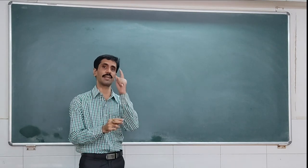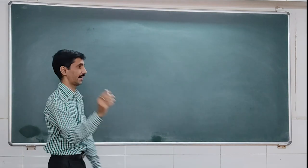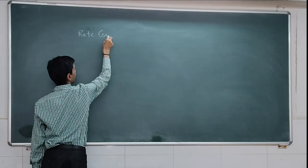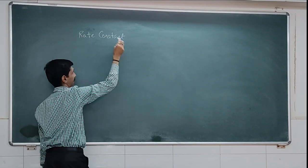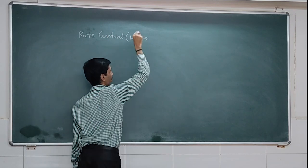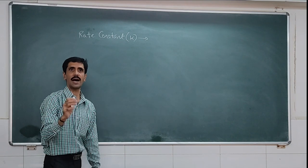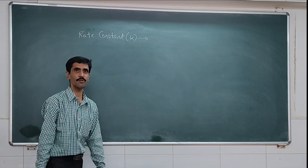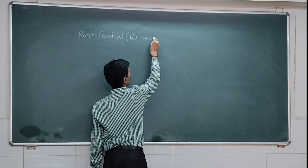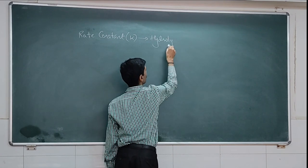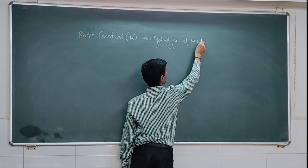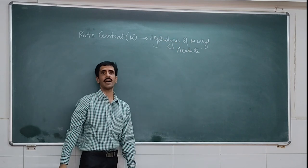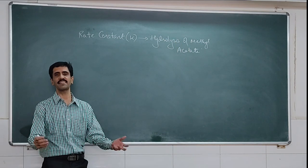Starting with the aim of the experiment: to determine the rate constant, abbreviated as K. The reaction is the hydrolysis of methyl acetate. Methyl acetate is an ester, and its hydrolysis takes place either in the presence of an acid catalyst or a base catalyst.